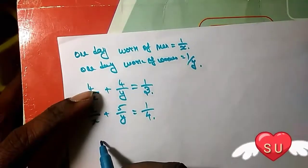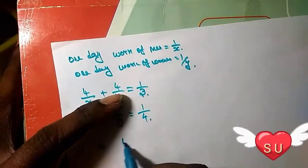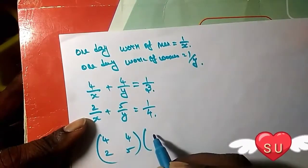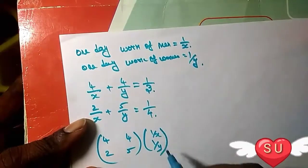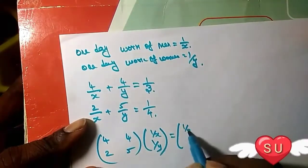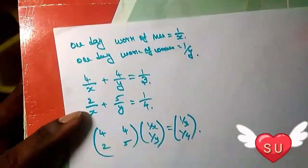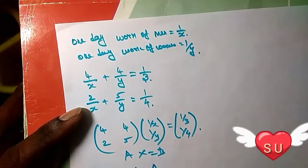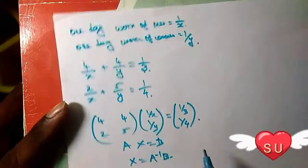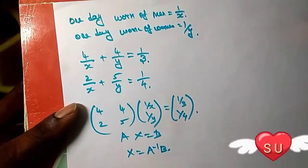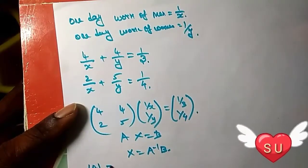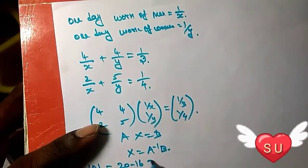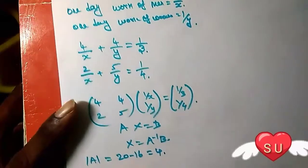We write it as: four, four, two, five. One by X, one by Y. Then one by three, one by four. Next, if A X equals B, then X equals A inverse of B. Next, we find modulus of A. Modulus of A equals twenty minus sixteen, which equals four.